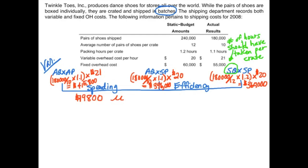For the efficiency variance, the difference between the middle peg and the third peg is $36,000. The only difference in those two equations is quantity. Our actual quantity of hours was more than we should have used — that is a bad thing — so we have a $36,000 unfavorable efficiency variance for variable overhead.